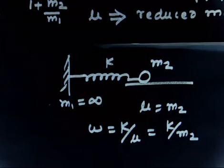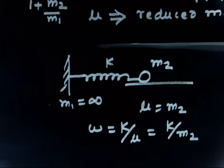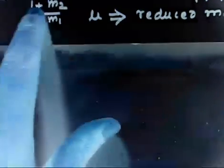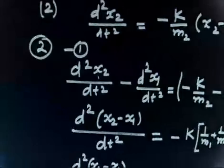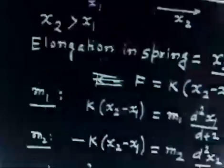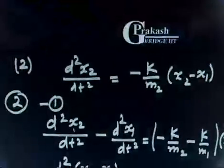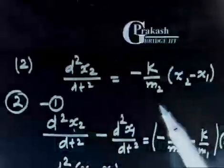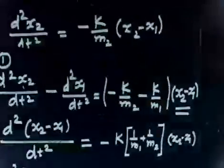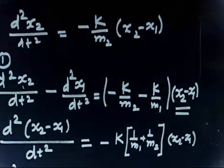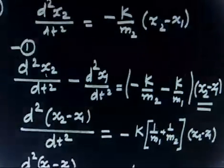So if m1 goes to infinity, the system reduces to a single mass oscillating on a spring. The key method here: write two equations of motion, divide equation 1 by m1 and equation 2 by m2, then subtract them. This gives a single SHM equation in (x2 − x1), leading directly to the reduced mass formula. We will discuss the next problem.